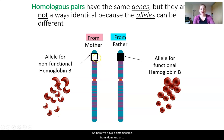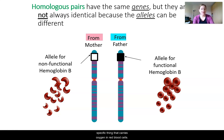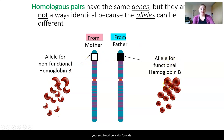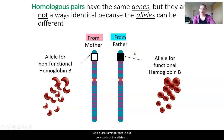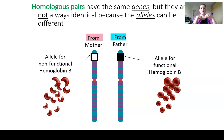Here we have a chromosome from mom and a chromosome from dad, and we're looking specifically at the gene that codes for hemoglobin. Hemoglobin is a protein made in your body that carries oxygen in red blood cells. If you have the allele for the non-functional hemoglobin, it causes your red blood cells to sickle. If you have the allele for the functional hemoglobin, your red blood cells don't sickle. In this example, a person has a non-functional allele from one parent and a functional allele from another parent. Both alleles are used, so both proteins — functional and non-functional hemoglobin — are being made.